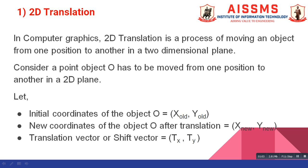Now let us see what is 2D translation. In computer graphics 2D translation is the process of moving an object from one position to another in two dimensional plane.